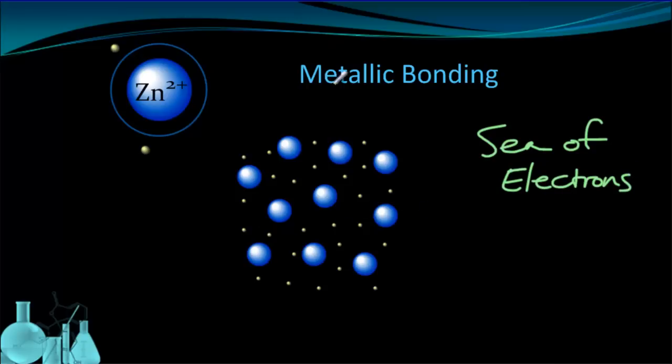And this is metallic bonding. We see that metal cations are basically floating around in what we call a sea of electrons. All the particles here are mobile.